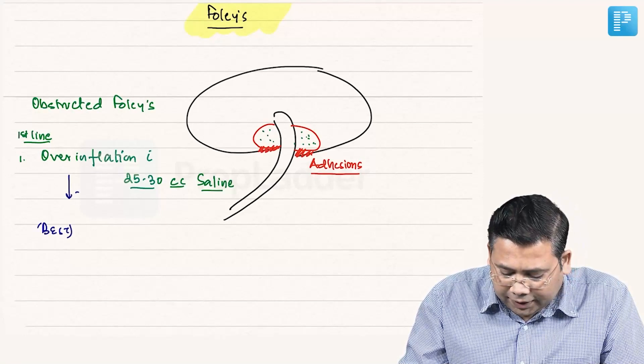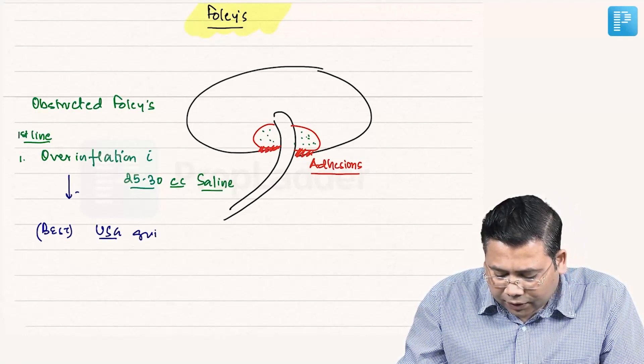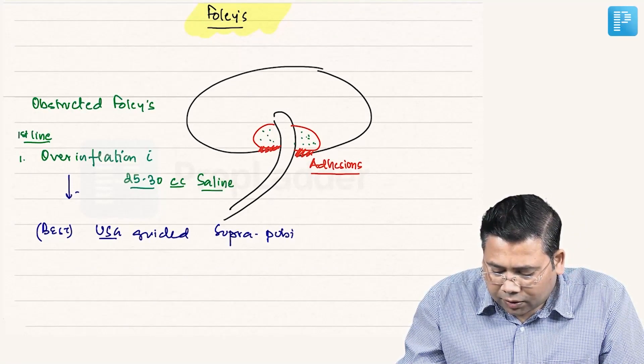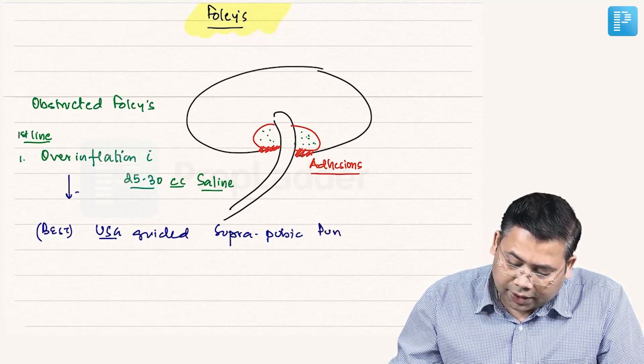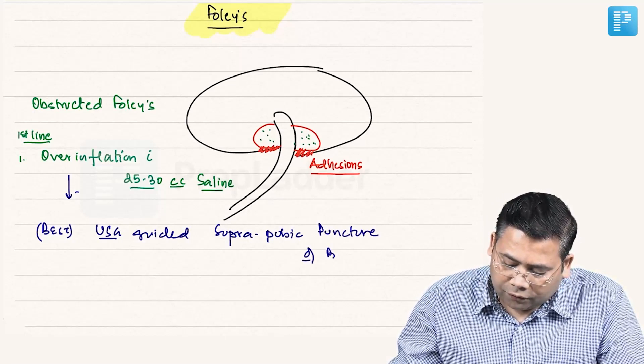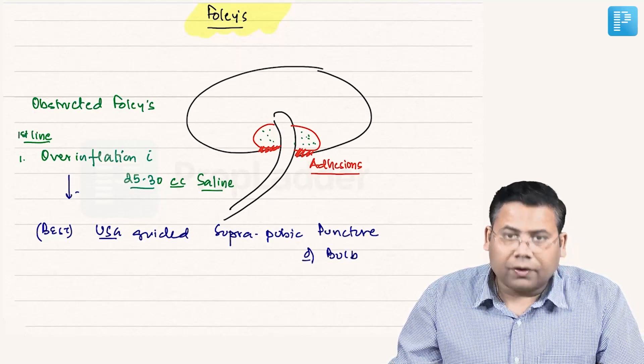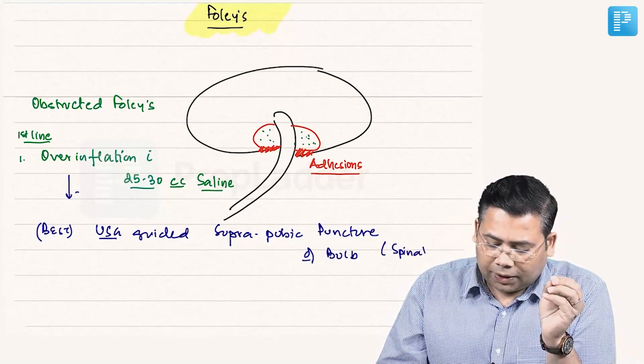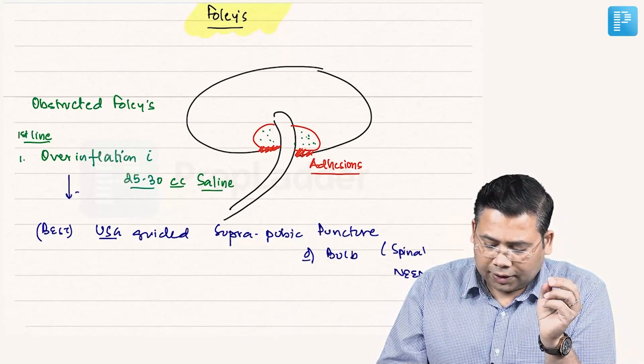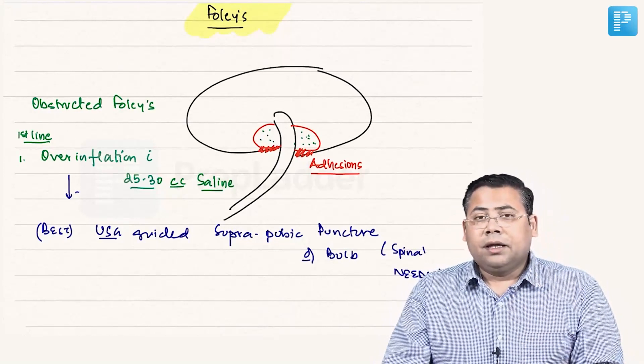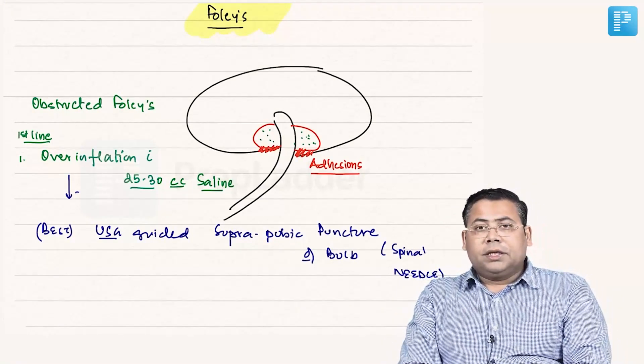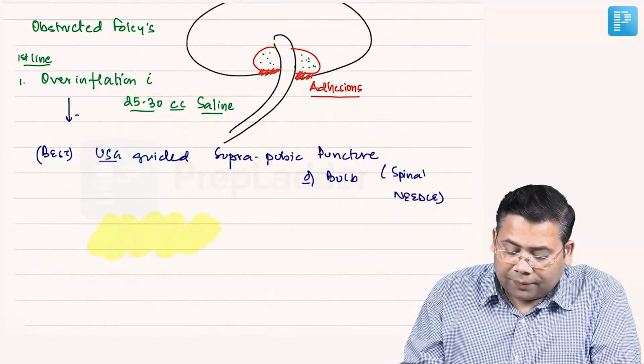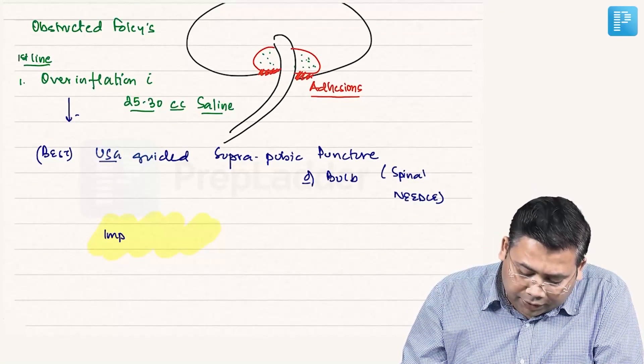Then the best technique is USG-guided suprapubic puncture. So USG-guided suprapubic puncture of bulb. And this is very, very, very important. So with a spinal needle, with a spinal needle, you are going to puncture it and this is actually considered this. In the era when this USG was not available, people used to push ether and they used to go for chemical dissolution.